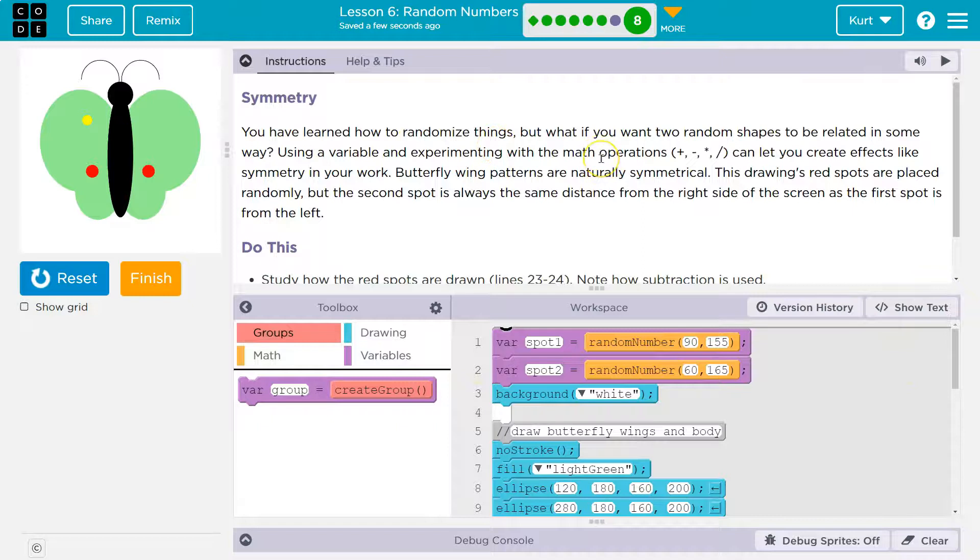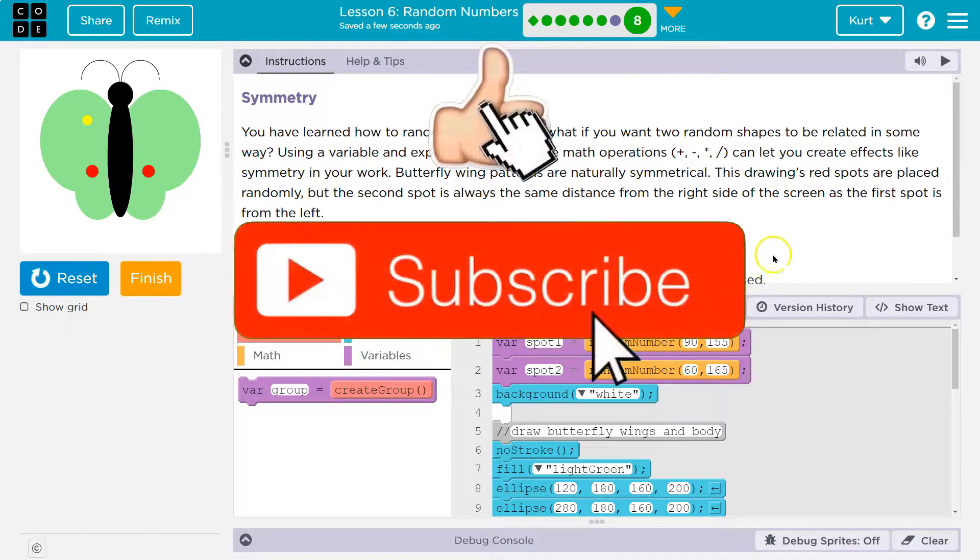You have learned to randomize things, but what if you want random shapes to be related in some way? Using a variable and experimenting with the math operators - plus, minus, times, divide - can let you create effects like symmetry in your work.